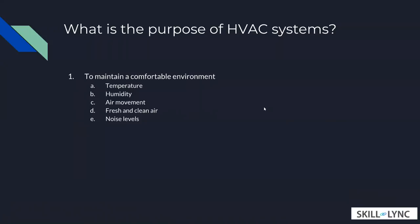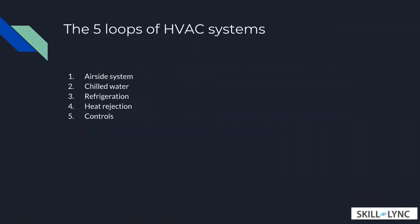Today we are going to start from scratch and describe the fundamental blocks of an HVAC system. Any HVAC system — whether in your car, a hospital, or a data center — has five subsystems. These are: the air side system, chilled water system, refrigeration system, heat rejection system, and control system. Understanding these five units is what HVAC engineering is all about. We'll break down each one step by step.